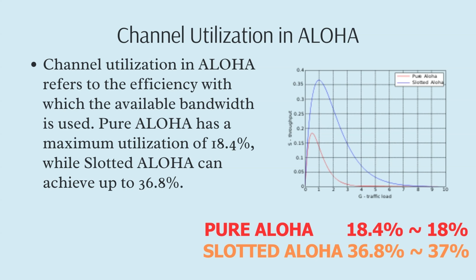Channel utilization in Aloha refers to the efficiency with which the available bandwidth is used. Pure Aloha has a maximum utilization of 18%, while Slotted Aloha can achieve up to 37%. These percentages highlight the importance of minimizing collisions to optimize network performance. Efficient channel utilization is crucial for ensuring that data is transmitted reliably and quickly, making it a key consideration in network design.